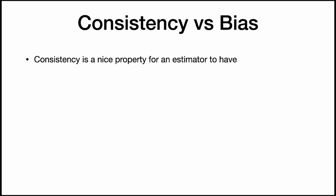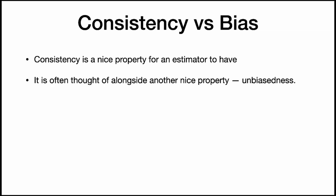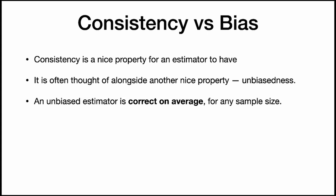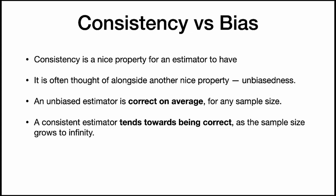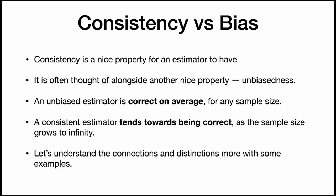Consistency is a nice property for an estimator to have, and it is often thought of alongside another nice property: unbiasedness. An unbiased estimator is correct on average for any sample size, whereas a consistent estimator tends towards being correct as the sample size grows to infinity. Let's understand the connections and distinctions with some examples.